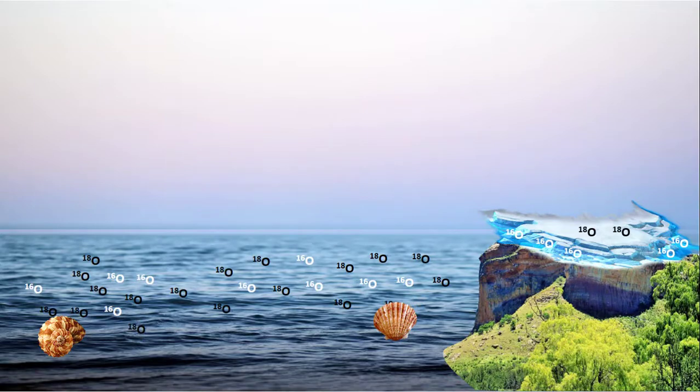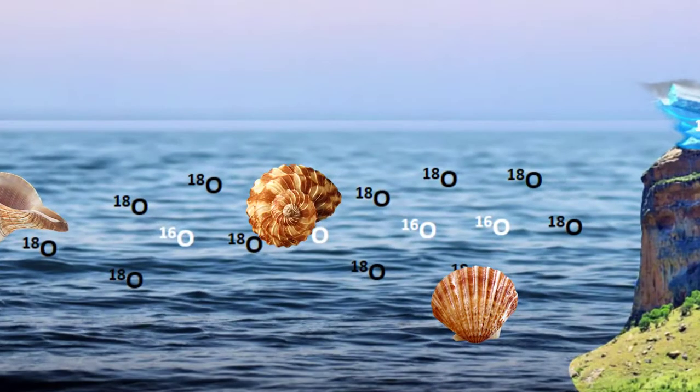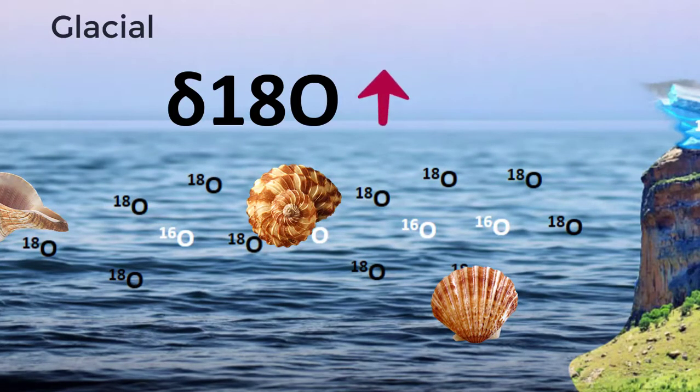From ocean, the O18 isotope is taken up by marine organisms to form shells or tests. That causes an increase in O18 isotope in their shells during glacial periods.